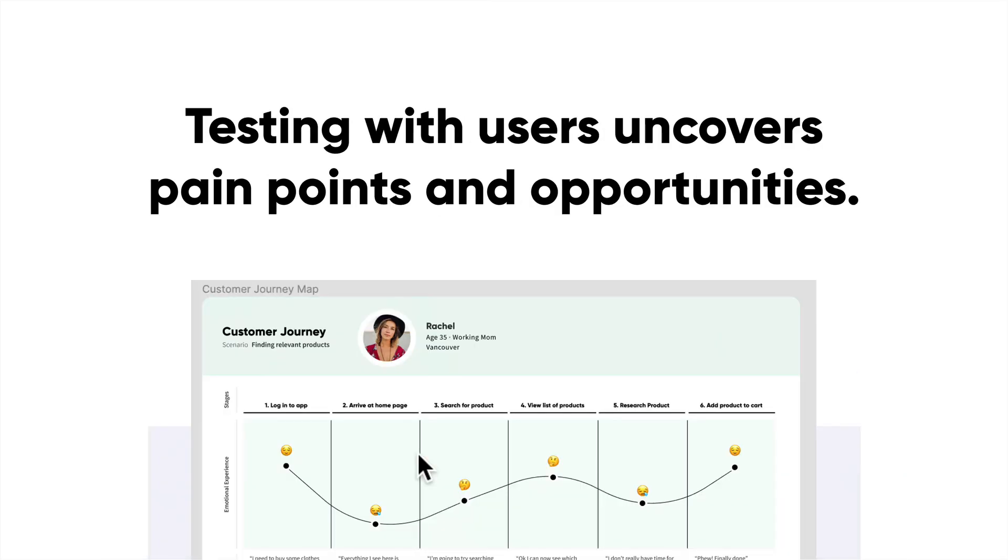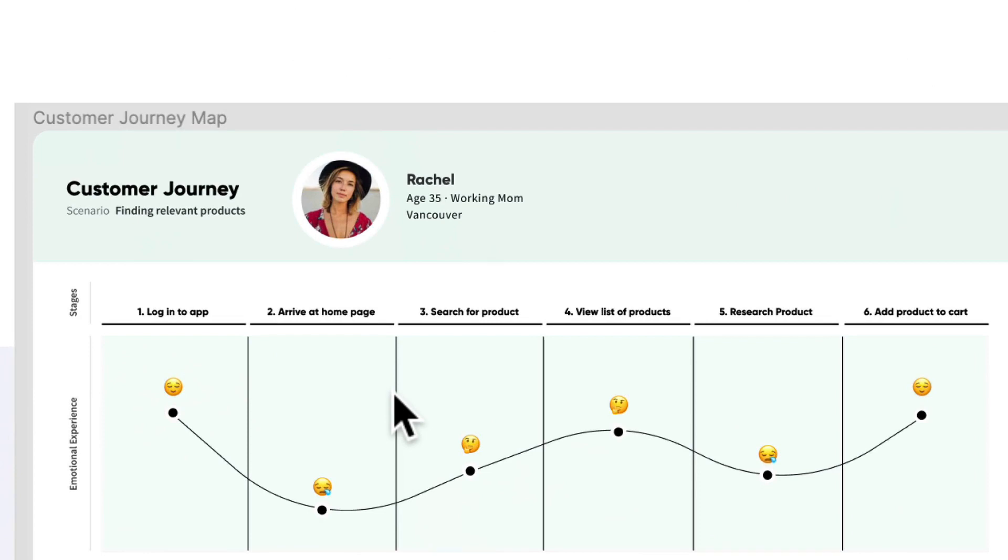The next thing is user testing. We use them a lot for user testing. The sooner you test, the better, and that's the big thing. Like I said before, fail fast. So you can get quick feedback without necessarily developing complex prototypes with all those different types of visual things like typography, color, and all the different types of details like that. Testing with users really uncovers the different types of pain points and opportunities.